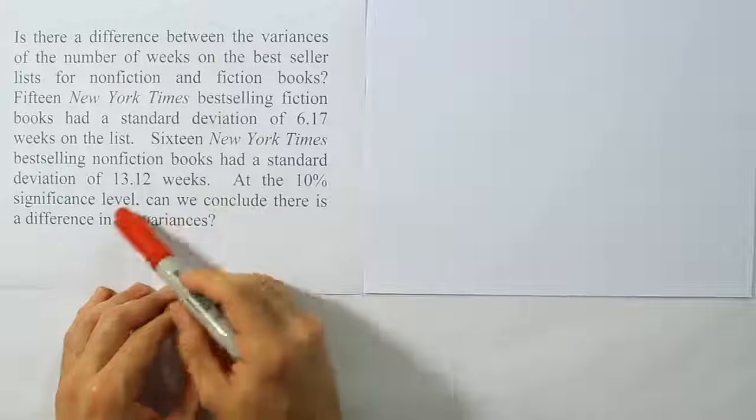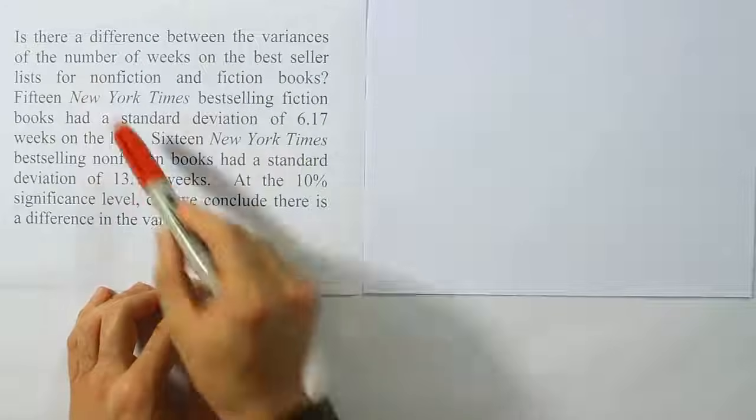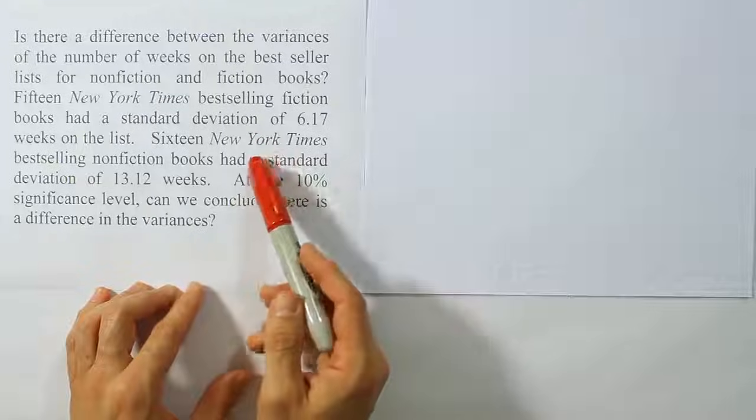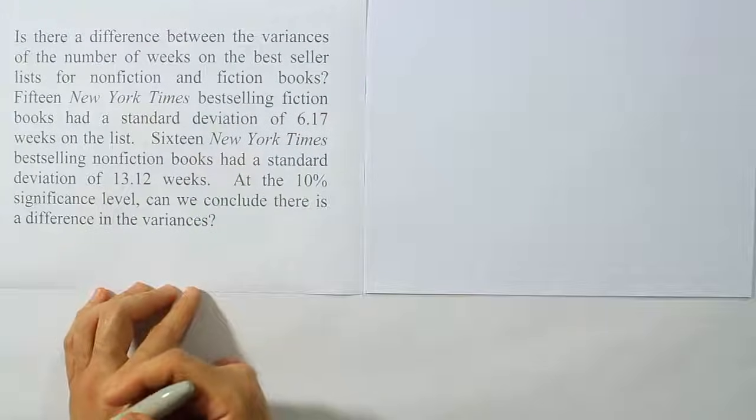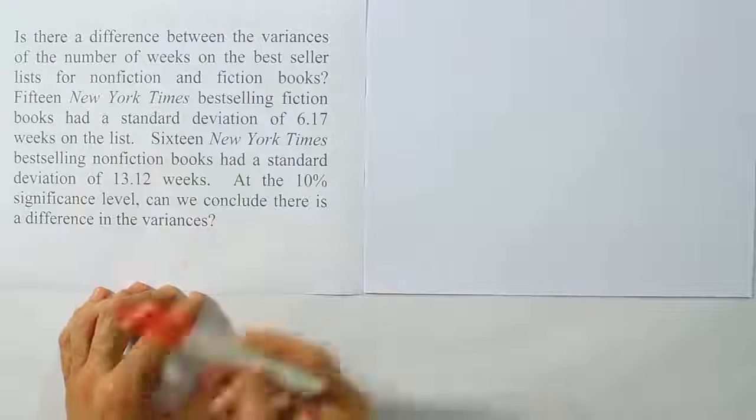This final sentence tells me we're dealing with a hypothesis test about the population variances for these two groups. So we have two samples that have been independently and randomly drawn from their respective populations, and it looks like we have pretty small sample sizes, 15 and 16.